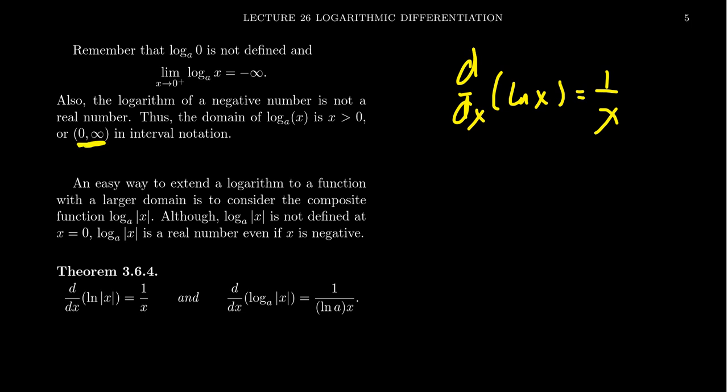The reason for that is that the natural log — or in fact, the log base anything — log base a of zero is not defined. When you look at the graph of a logarithm, as x approaches zero from the right, the log base a of x is actually going to have a vertical asymptote. The graph is going to approach negative infinity.